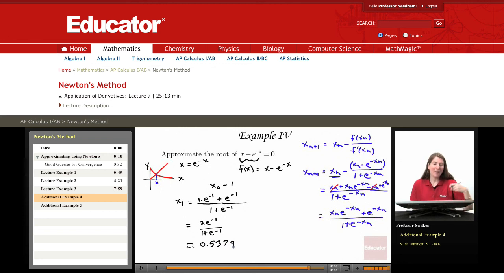Now, we could carry out additional iterations of Newton's method. And if we were to do that, we would see that our x values converge to approximately 0.567143, etc.